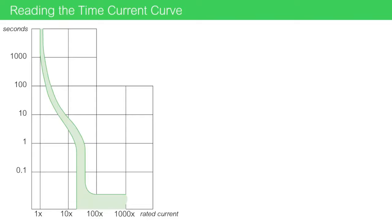There are two curves with a shaded region between. At a given current that is over the rating of the circuit breaker, the circuit breaker will experience a trip somewhere in the shaded range.